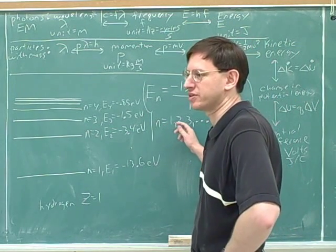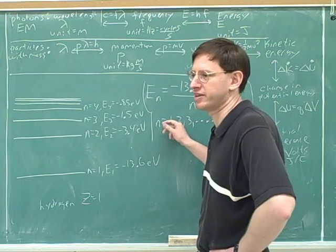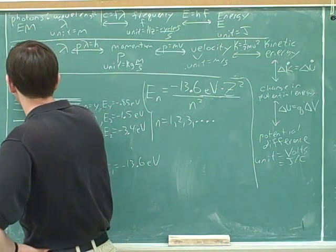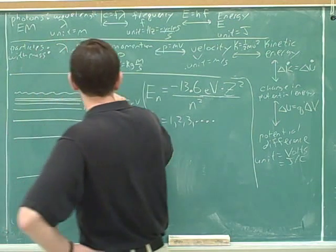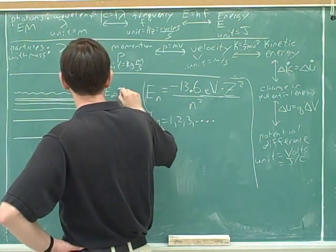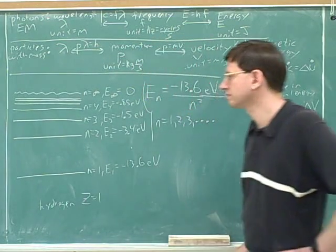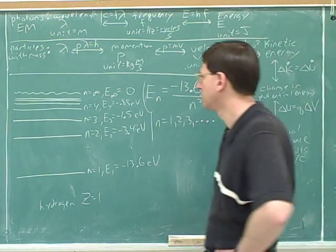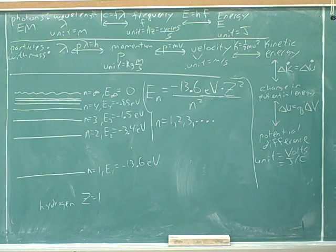You can plug in n equals 900 or n equals 1,000. In fact, there's applications where you would plug in n equals 900 or 1,000. Theoretically, you can go up to n equals infinity. What would the energy be when n equals infinity? Zero. Good. OK.